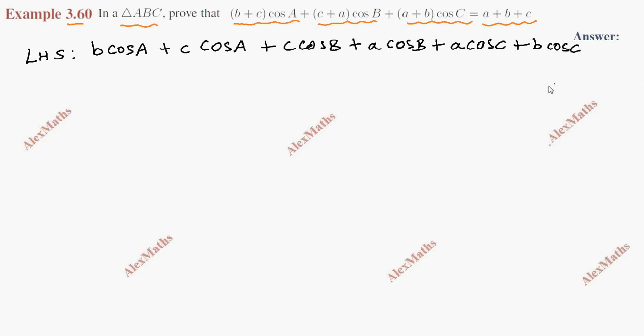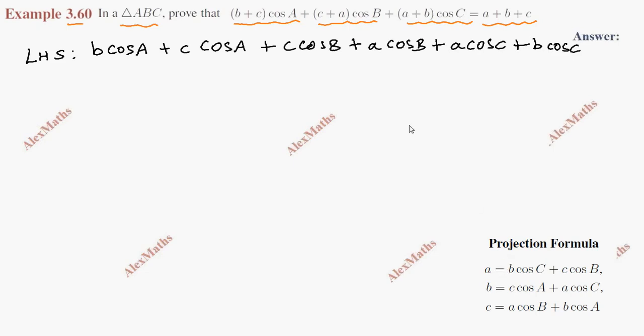Now we will use the projection formula. The projection formula states: A equals B cos C plus C cos B.